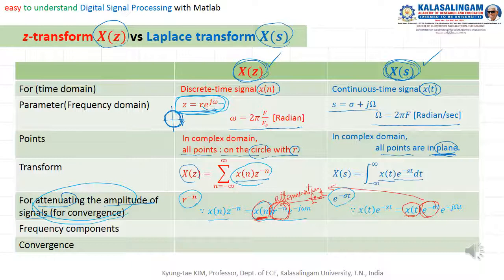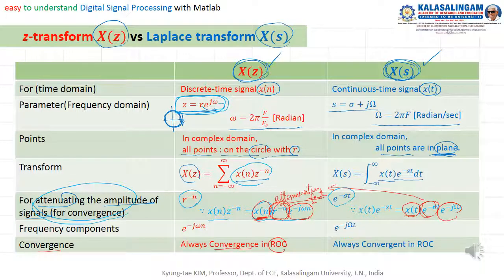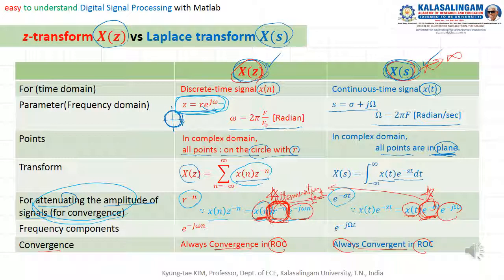This is a very important concept. This term here — r to the power minus n and e to the power minus sigma t — is the attenuation factor. Because of this attenuation factor, x(t) always goes to a finite value. Also, convergence always happens in the ROC. Because of this, X(G) and X(s) go to finite values, not to infinity. For this we need some condition — we call this the region of convergence.